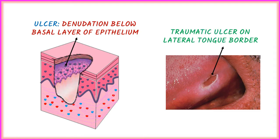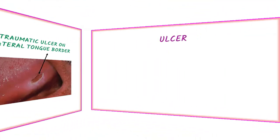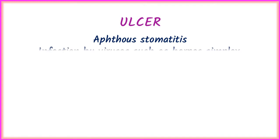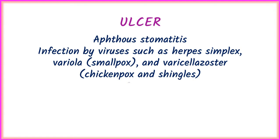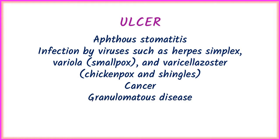A clinical example of an ulcer is a traumatic ulcer on the lateral border of the tongue. Other conditions in which ulcers are seen include aphthous stomatitis, infections by viruses such as herpes simplex, variola (smallpox), varicella-zoster (chickenpox), and shingles, as well as cancer and granulomatous diseases.